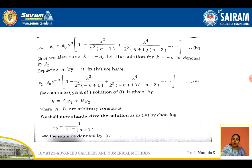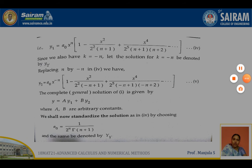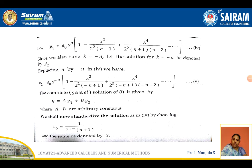Taking a0 outside, y1 can be written as a0 x^n [1 − x²/(2²(n+1)) + ...]. Similarly, we find y2 by replacing k = −n in the recurrence relation. After getting y1 and y2, we substitute in the general solution y = a·y1 + b·y2. This gives the complete general solution for the Bessel differential equation.